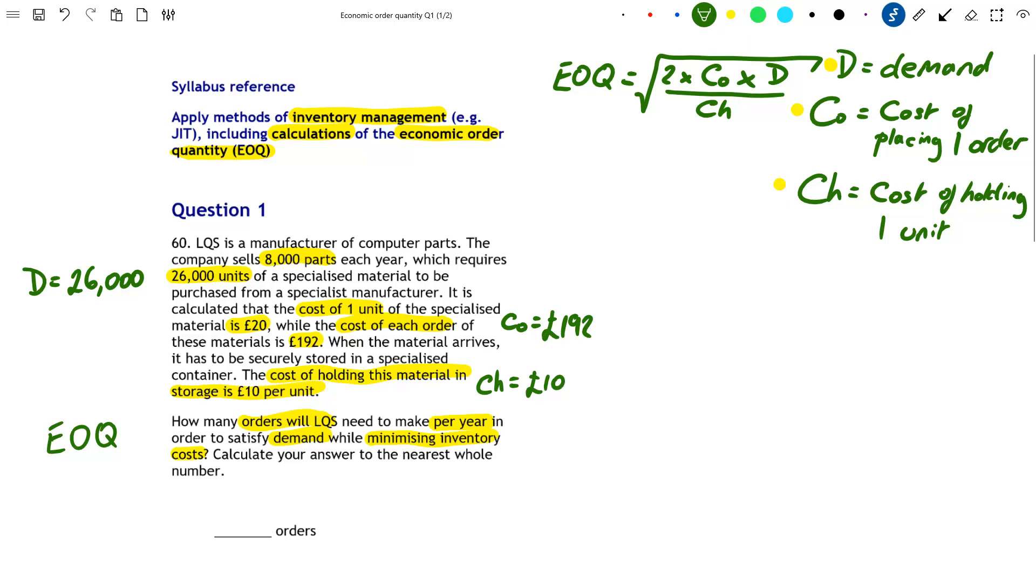We now have all three variables, so we can start to work out the EOQ. So if we input our figures, EOQ is equal to the square root of 2, which is a constant number you do not change, multiplied by CO which is 192, multiplied by D which is demand which is 26,000, which you can see on the left of the screen, all over CH which we just worked out to be 10 pounds.